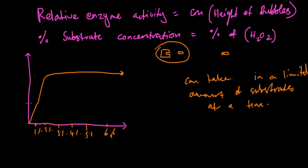So, in this case, we have 3, 4, 5, 6% of hydrogen peroxide. And over here, we've got relative enzyme activity, so height of bubbles. The height of bubbles is going to be constant. It's going to be exactly the same for 3, 4, 5, 6%, because there aren't enough enzymes to actually make it even faster. The activity is going to remain the same, because there's a limited amount of enzymes.